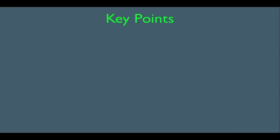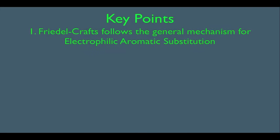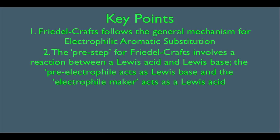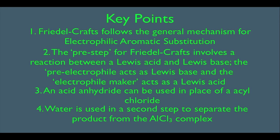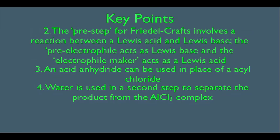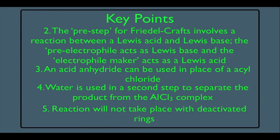In this online lecture we're going to discuss the Friedel-Crafts acylation reaction. Key points: one, it follows the general mechanism for electrophilic aromatic substitution; two, the pre-step involves a reaction between a Lewis acid and a Lewis base, where the pre-electrophile acts as Lewis base and the electrophile maker as Lewis acid; three, an acid anhydride could be used in place of an acyl chloride; four, water is used in a second step to separate the AlCl3 complex; and five, the reaction will not take place with deactivated rings.